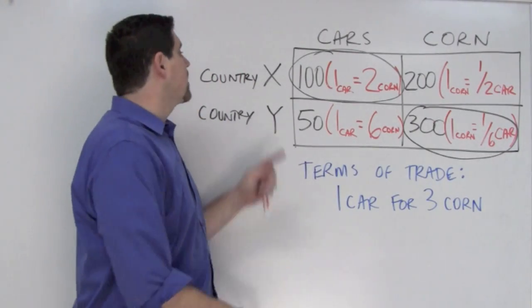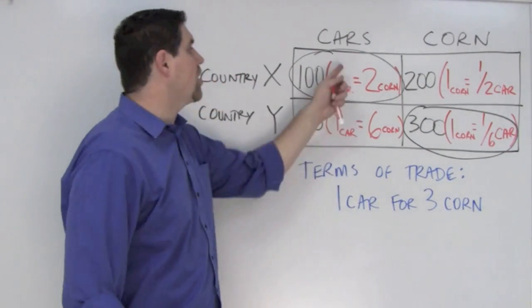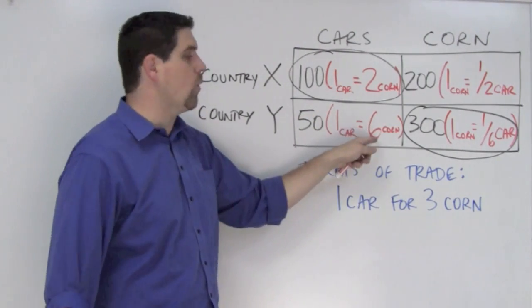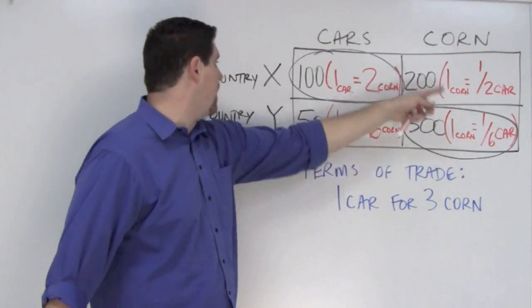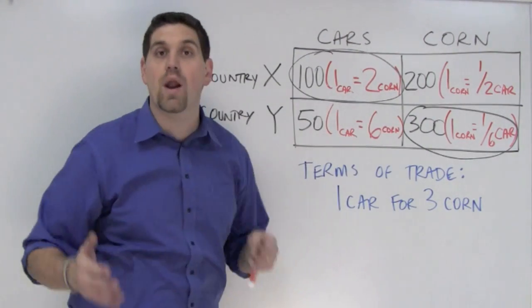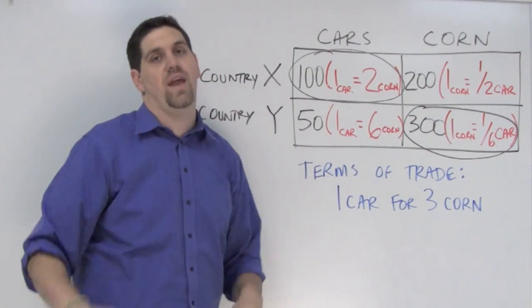As you can see from the numbers, Country X has a comparative advantage in cars because they have a lower opportunity cost than Country Y. And Country Y should produce corn because they have a lower opportunity cost than Country X. So I circled the country that has the lower opportunity cost and therefore a comparative advantage.